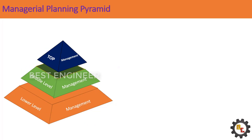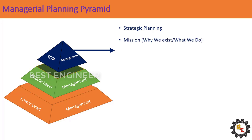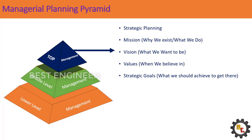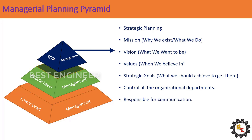The roles and responsibilities of different levels of management: first, top level management. Top level management is the ultimate source of power and authority, and their main priority is strategic planning. They formulate the mission, vision, values, and strategic goals. They control all departments in the organization and are responsible for communicating information to shareholders regarding the performance of the enterprise. They provide overall guidance, direction, encouragement, harmony, and collaboration.